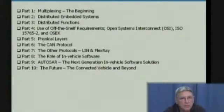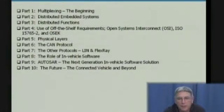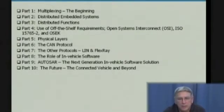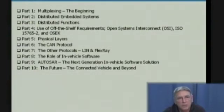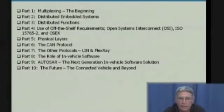We want to move then into distributed embedded systems, down to the atomic level to look at distributed functions. Then we want to move in and look at the use of off-the-shelf requirements. We'll take a look at the open systems interconnect, an ISO standard, and also OSIC. Then we'll move into the hardware area to look at some of the physical layers used in in-vehicle networking, and then on to the CAN protocol. We'll also look at other popular protocols — LIN and FlexRay.